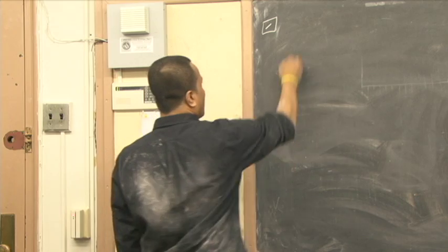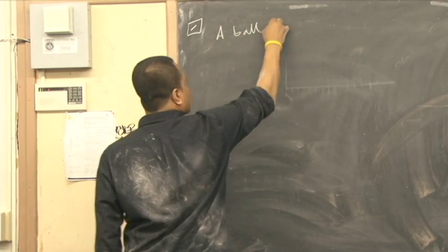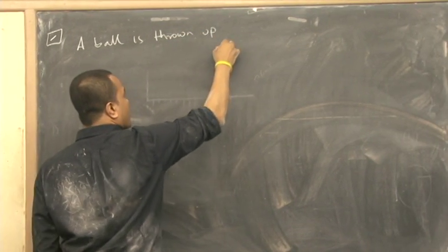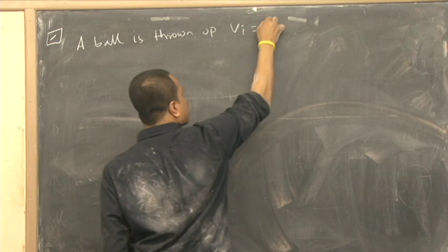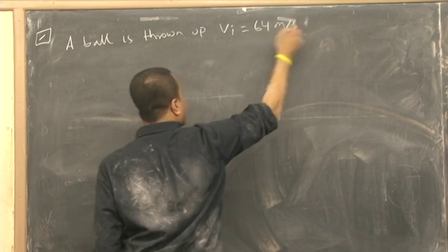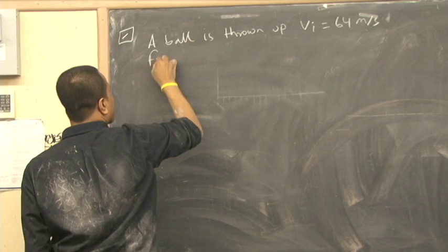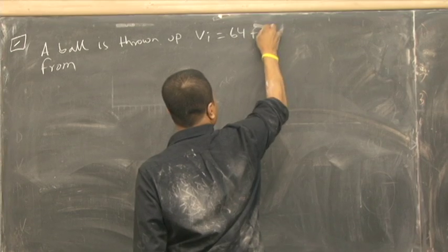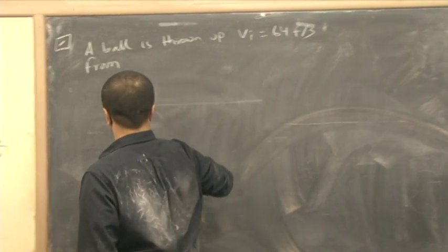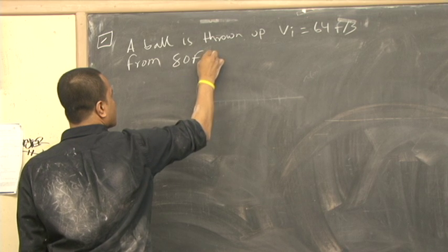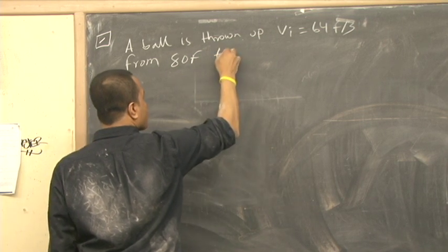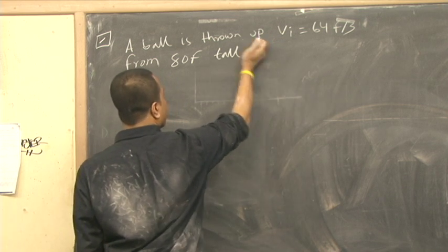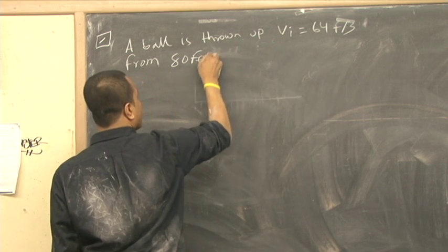Let us say a ball is thrown up with initial velocity 64 feet per second from 80 feet high.